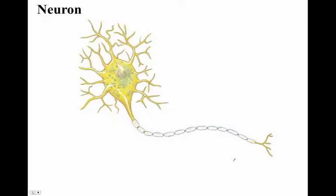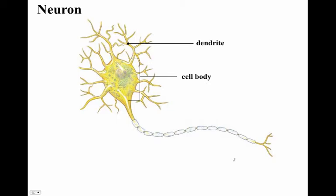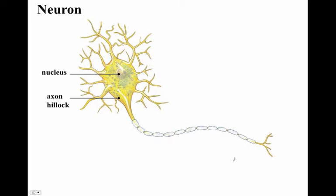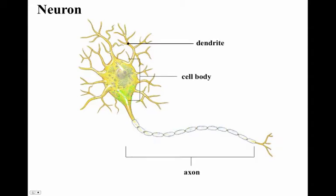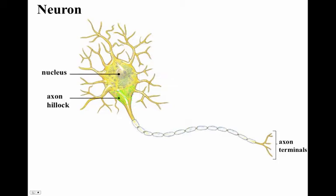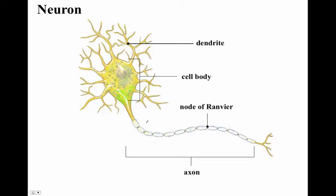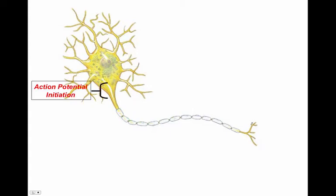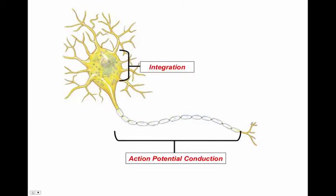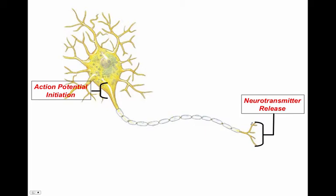This is our classic example of a neuron. The neuron is comprised of the cell body, which has a nucleus containing genetic information. We also have dendrites that send information into the cell body, and we have an axon hillock — the triangular area where the axon begins — which travels down to the axon terminals. In a myelinated axon, we see Schwann cells, and in between each Schwann cell is a gap called a node of Ranvier. Within the neuron: integration occurs in the cell body, action potential initiation happens at the axon hillock, conduction travels down the axon, and neurotransmitter release occurs at the axon terminals.